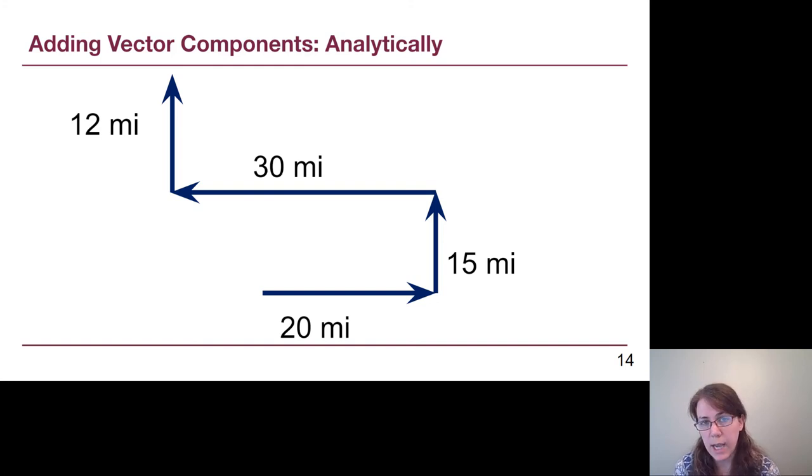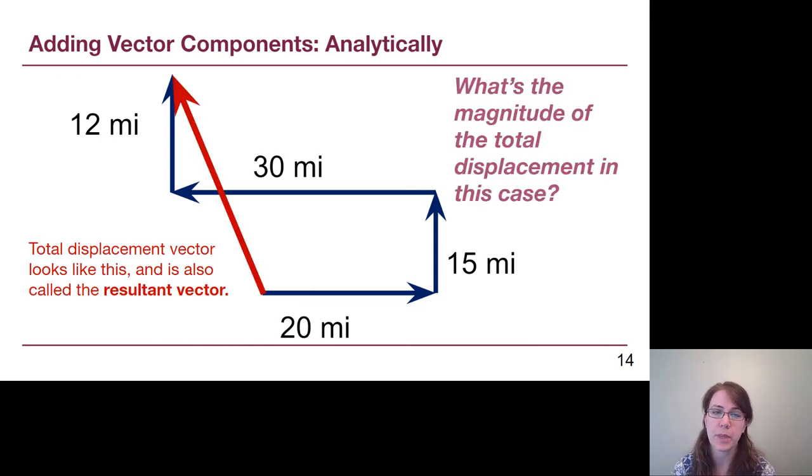Once we draw all of these out, we can kind of visually see by eye where our starting point was and where our ending point is. The total vector is just a single arrow that points from the very start to the very end, kind of like comparing these as one person taking the long way and somebody else with a helicopter taking the short way. If we draw that short way as a single arrow from the start to the end, that is the total displacement vector. Sometimes it's called the sum vector, sometimes it's called the resultant vector.